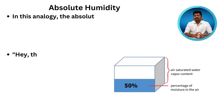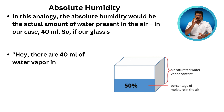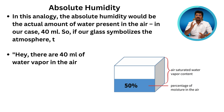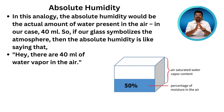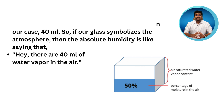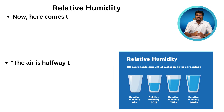For absolute humidity, in this analogy, absolute humidity is the actual amount of water present in the air — in our case, 40 ml. So if our glass symbolizes the atmosphere, absolute humidity is like saying there is 40 ml of water vapor in the air.